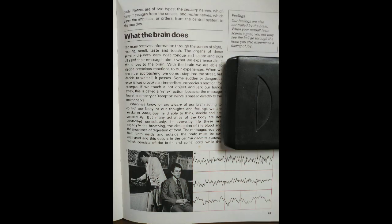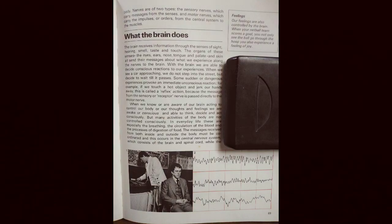The electroencephalogram can measure brainwave patterns and these are represented on a screen. The waves on the screen correspond to the different states of being awake and relaxed, awake and concentrating, and ordinary sleep.